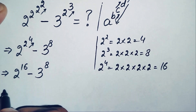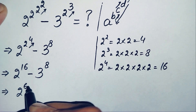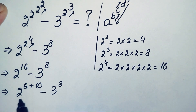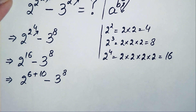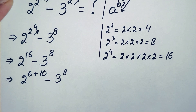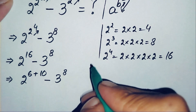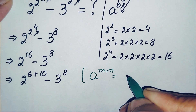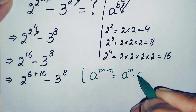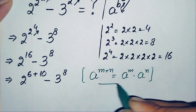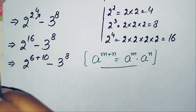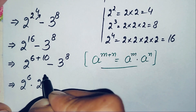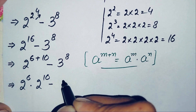We can write the power 16 as 6 plus 10, so 2 raised to power 16 becomes 2 raised to power 6 plus 10, minus 3 raised to power 8. Using the exponential identity that a raised to power m plus n equals a raised to power m times a raised to power n, this term becomes 2 raised to power 6 times 2 raised to power 10, minus 3 raised to power 8.